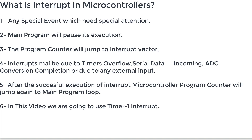Interrupts in a microcontroller may be due to any peripheral devices such as timers, serial port, ADC, comparators, or any external counter signal or timer signal which can cause the interrupt. After the execution of the interrupt, the microcontroller will resume to the main program from where the interrupt had paused it.